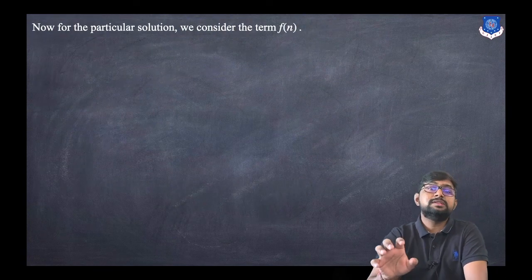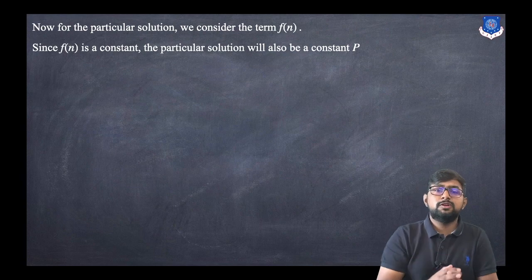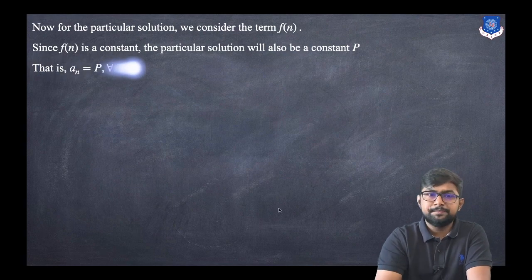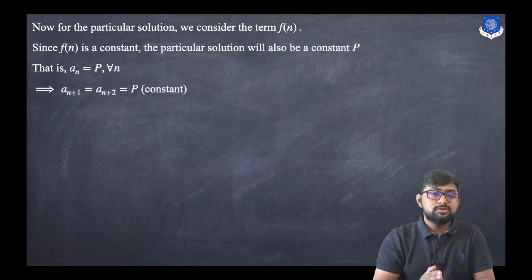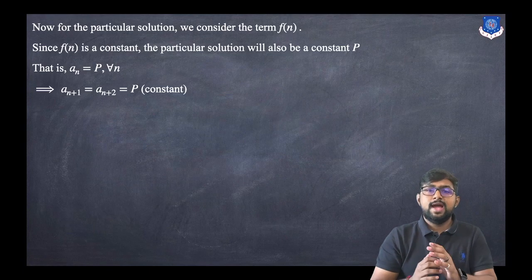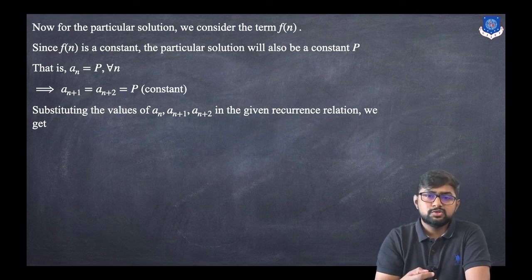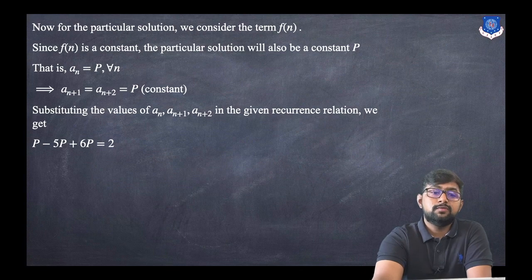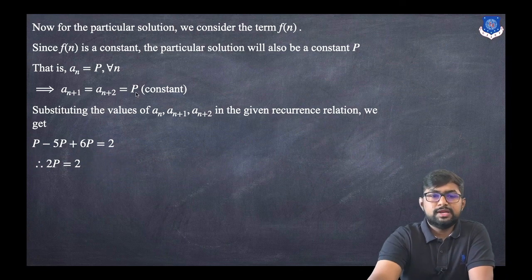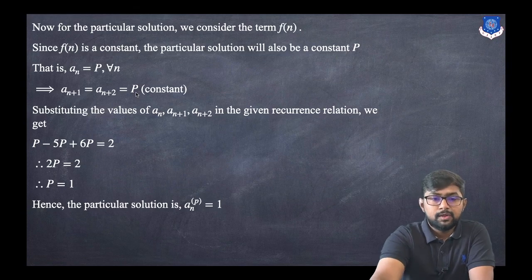For the particular solution, consider the right-hand side f(n), which is a constant term. So the choice of particular solution is also a constant: let a(n) = p for every n. Since a(n), a(n+1), and a(n+2) are all equal to p, substituting into the recurrence relation gives p − 5p + 6p = 2, so 2p = 2, meaning p = 1. Hence the particular solution is a(n)_p = 1.